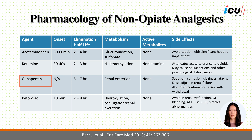Of note, abrupt discontinuation of gabapentin can result in withdrawal symptoms, so it is important to review patients' home medication lists and restart as able. It is renally excreted, so gabapentin dose needs to be renally adjusted. NSAIDs can be considered as an alternative to opioids for pain management during discrete and infrequent procedures. Ketorolac can be used for up to 5 days in patients with no renal dysfunction or risk of GI bleeding.